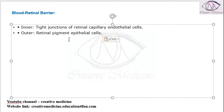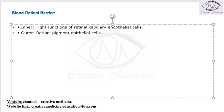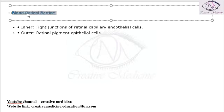So, we have two blood-retinal barriers. The inner blood-retinal barrier is present in the tight junctions of retinal capillary endothelial cells, whereas the outer blood-retinal barrier is present in the pigment epithelial cells.